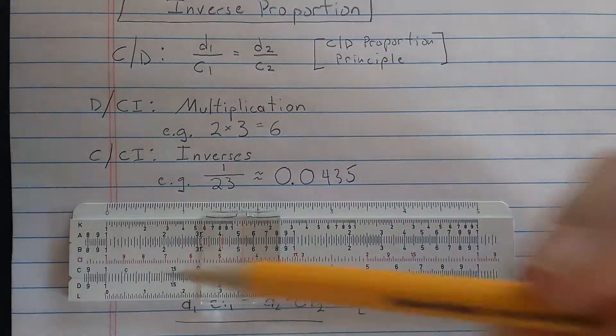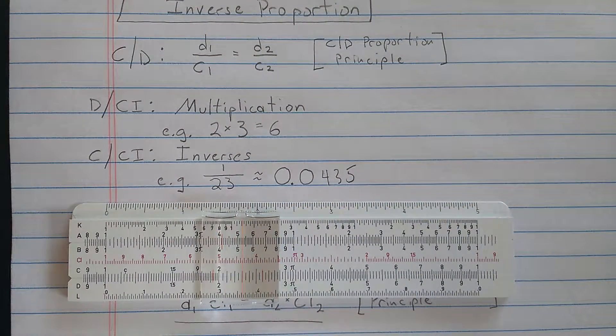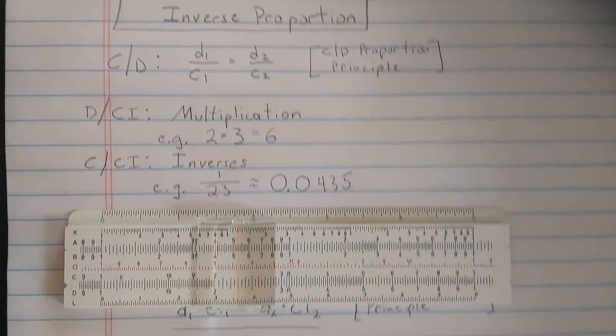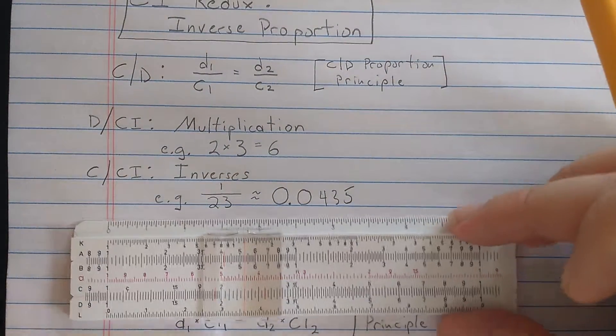So the C versus CI scale can read inverses. D versus CI can do multiplication. And of course, remember that the C and the D scale, using those in tandem,